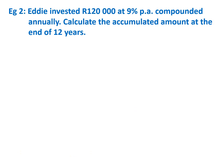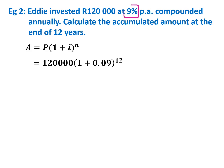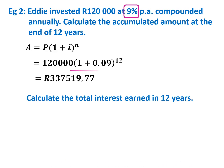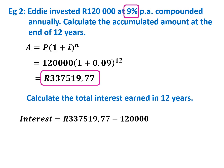Example: Eddie invested 120,000 rand at 9% per annum compounded annually. How much will he have after 12 years? Write down the compound interest formula. P is 120,000, I is 9% divided by 100 giving 0.09, and N is 12. The answer is 337,519 rand and 77 cents. To find total interest earned over 12 years, subtract the initial 120,000 rand, giving 217,519 rand and 77 cents in interest.